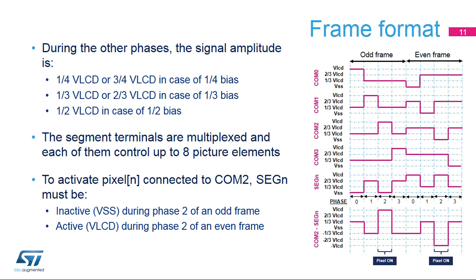The greater the multiplexed rate, the more segment or picture elements you can drive with a given number of segment terminals. For example, to activate a pixel N connected to COM 2, SEG N must be inactive, VSS, during phase 2 of the odd frame, and active, VLCD, during phase 2 of the even frame. A pixel is active if the corresponding SEG N line has a voltage opposite that of the COM line, here COM 2, and inactive when the voltages are equal. As a result, the voltage applied between COM 2 and SEG N — observable on the COM 2 minus SEG N waveform — is plus VLCD during phase 2 of the odd frame, and minus VLCD during phase 2 of the even frame.